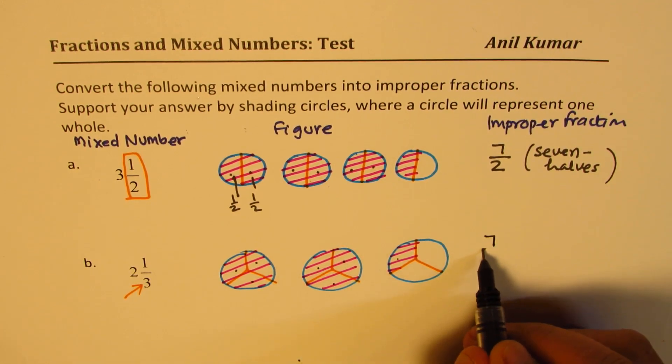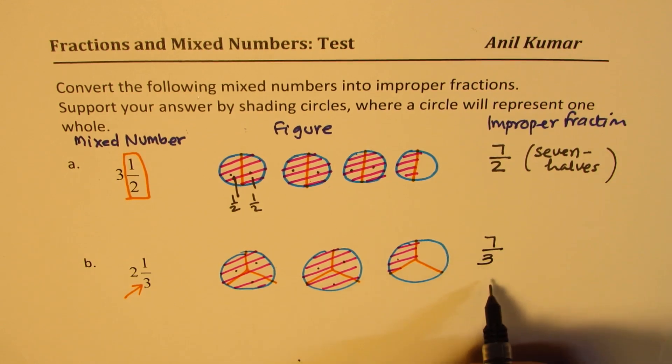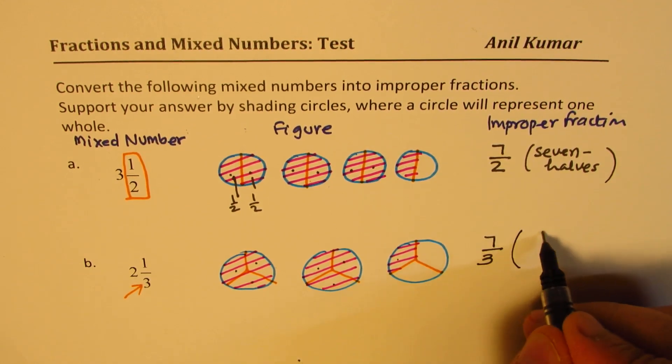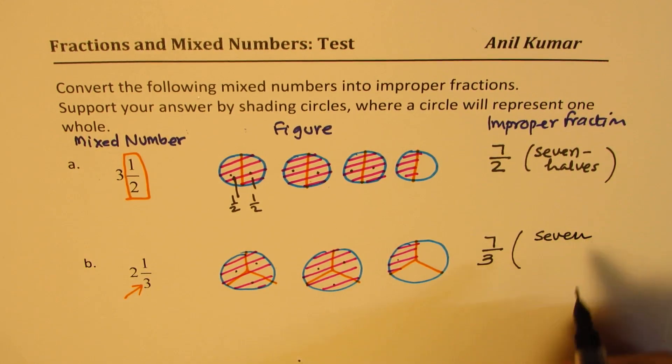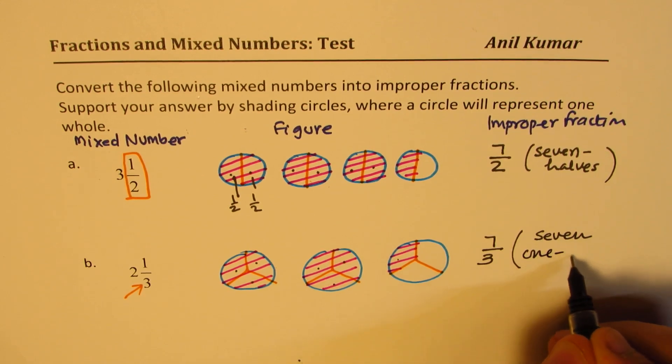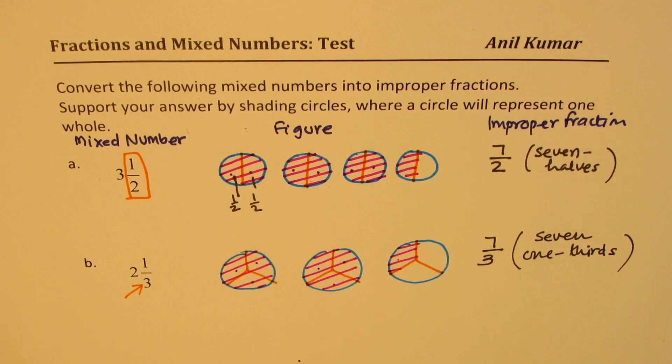seven out of three. So it is seven one-thirds, or you can say seven thirds, or 7/3.